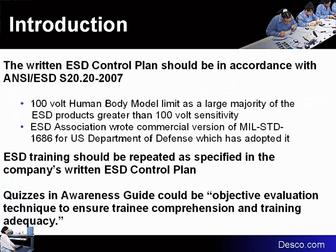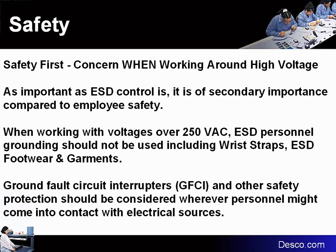The ESD control plan is designed around what is referred to as the 100 volt human body model limit, which was selected by the ANSI S2020 as a baseline for susceptibility issues, as the threshold for the large majority of ESD products on the market have sensitivities greater than 100 volts. Safety first is the most overriding condition. Anytime operators might be working with live circuitry or anything that would exceed 250 volts AC, personal grounding should not be used, but rather ionization for static control.